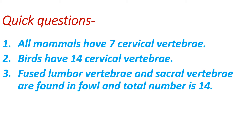Now here are some general questions that are commonly asked. First, remember that in mammals, cervical vertebrae number is 7. In birds, cervical vertebrae number is 14. And in the case of fowl or poultry birds, the lumbar and sacral vertebrae are fused, with a total number of 14.